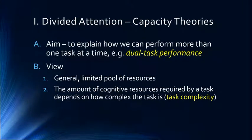Capacity theories aim to explain how we can perform, or appear to perform, more than one task at a time — we call this dual task performance. Walking and chewing gum, walking and talking are things most people can do fairly well. The general view is that we have a general limited pool of resources, and the amount of cognitive resources required by a task depends on how complex the task is. Once that pool has been depleted, things will start to suffer — we'll have to task switch or pay less attention to one thing.